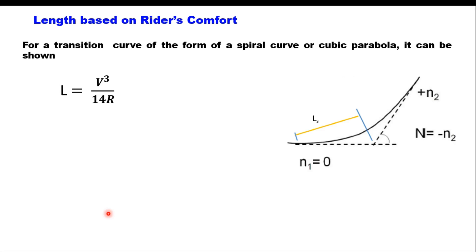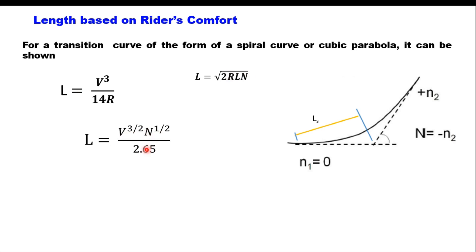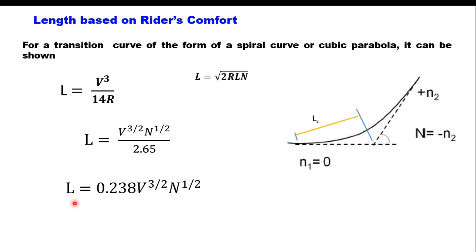For a transition curve in the form of a spiral or cubic parabola, it can be shown that L = √(2RLn), leading to L = 0.238 · V^(3/2) · n^(1/2) from the consideration of rider's comfort. In almost all cases this length is about 75% of the length obtained from the headlight sight distance criterion, and therefore it is generally not considered as the governing design parameter. Design is carried out based on headlight sight distance only.